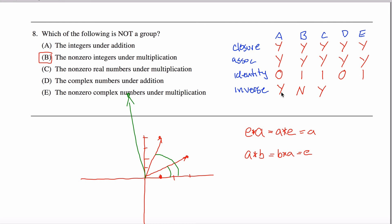For the complex numbers under addition: the identity is zero, so if you start with any complex number like three plus two·i, is there another complex number you can add to get back to zero? Yes — its negative. Negative three minus two·i added to three plus two·i gives zero plus zero·i, which is the identity element. Yes for D.